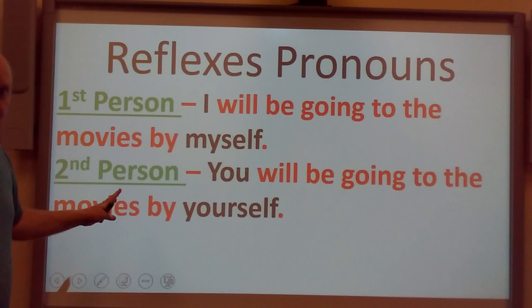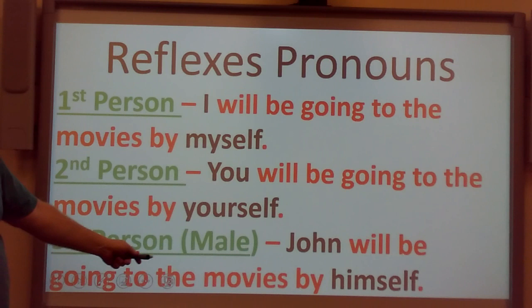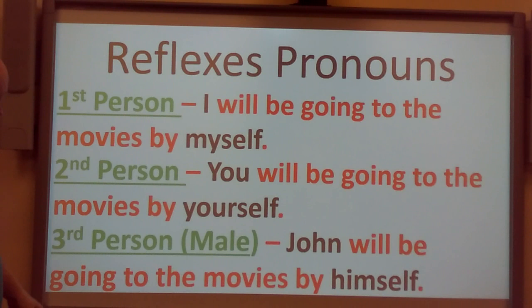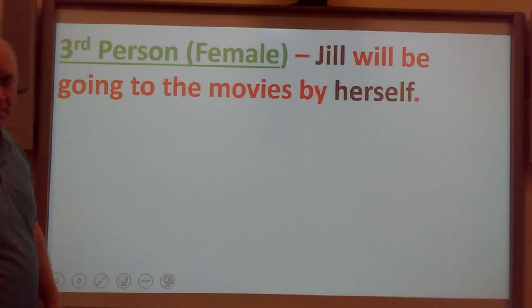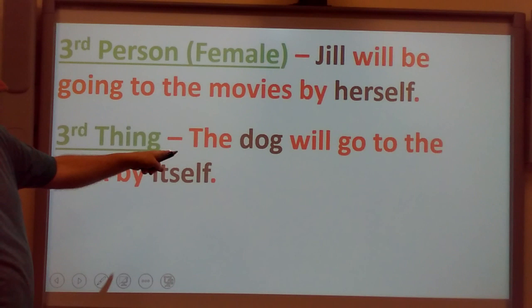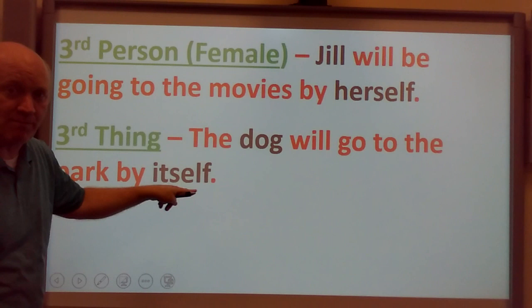Second person: 'You'll be going to the movies by yourself.' Remember, second person has the word 'you' in it. Third person, male: 'John will be going to the movies by himself.' Third person, female: 'Jill will be going to the movies by herself.' Third thing: 'The dog will go to the park by itself.' Remember, a dog is a thing, so we use 'itself.'